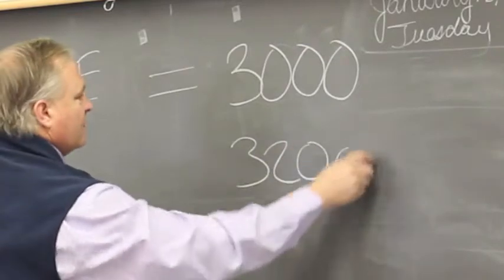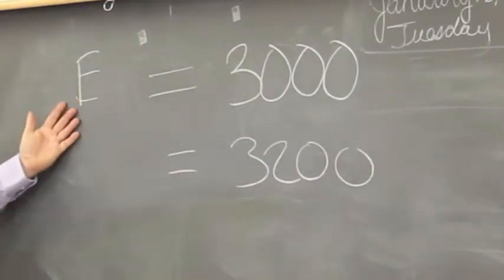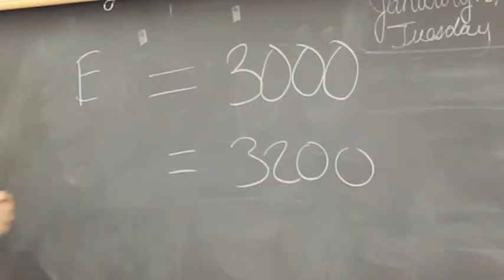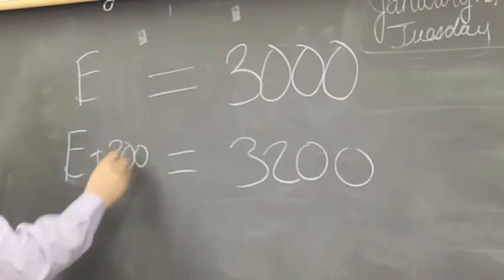Does everybody see that? Okay. What did I do to this E? You added two hundred pounds. What am I going to write? E plus two hundred. Yeah.